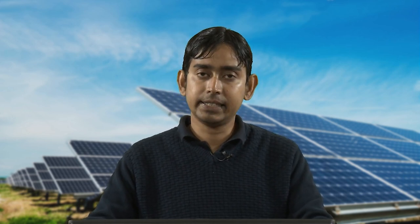Just like synthetic dyes, there are also several natural dyes — colorants derived from plants, invertebrates, or minerals. The majority of natural dyes are vegetable dyes from plant sources such as roots, berries, bark, leaves, and wood, as well as some biological sources like fungi and lichens. Replacing synthetic dyes in DSSCs with eco-friendly, biodegradable, and cost-effective natural dyes opens up a new direction for commercialization. Natural dye extracts from red turnip and pomegranate have been used to obtain power conversion efficiencies of 1.7% and 1.5% respectively — lower than synthetic dyes but still promising.